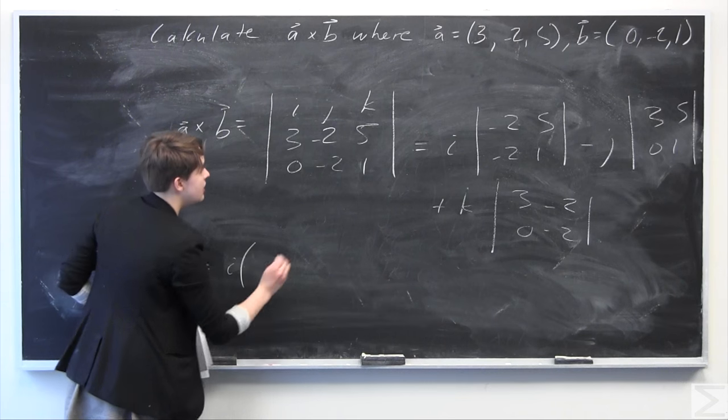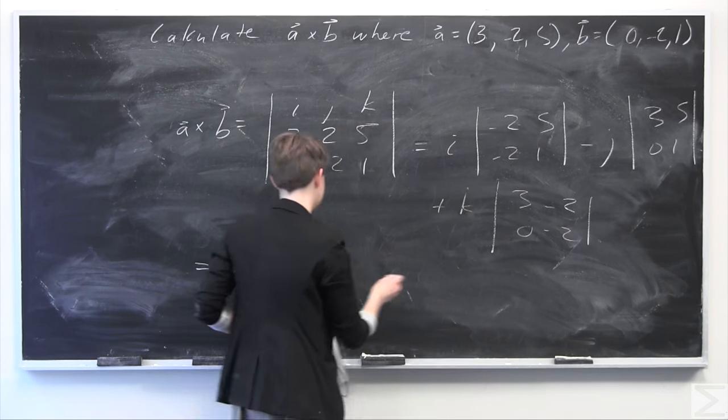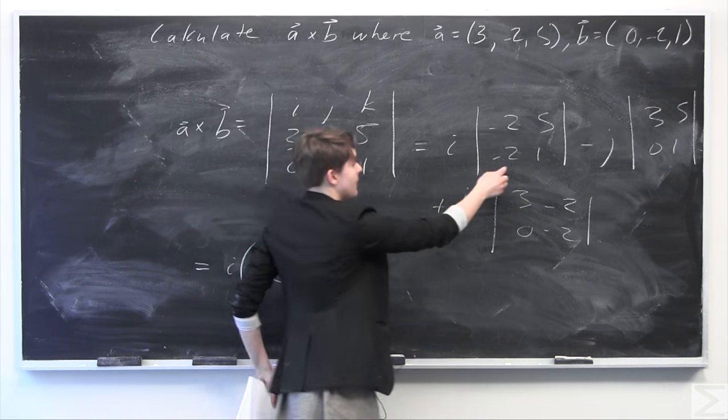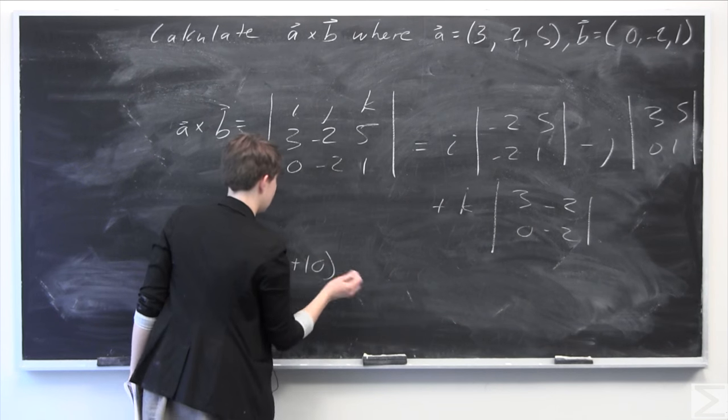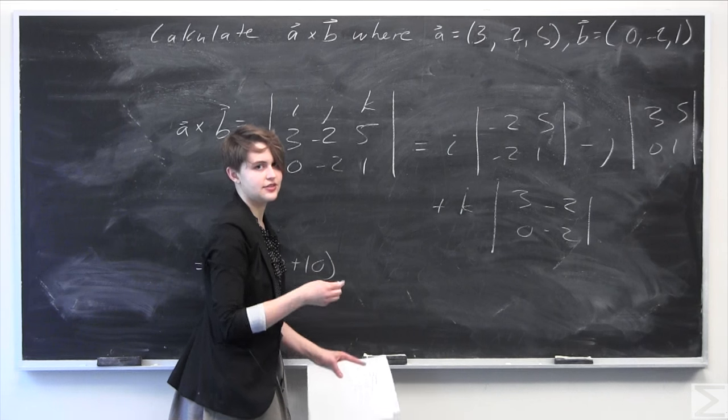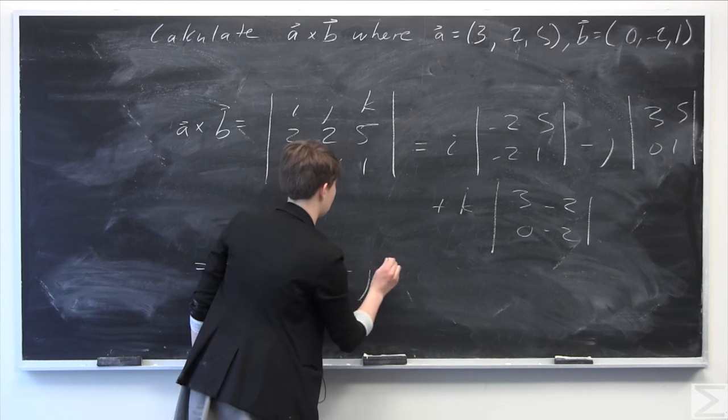We're going to have i times -2 times 1, which is -2, minus -2 times 5, which is +10. Make sure to be careful with the positives and negatives. It gets really easy to get mixed up if you're not paying careful attention.